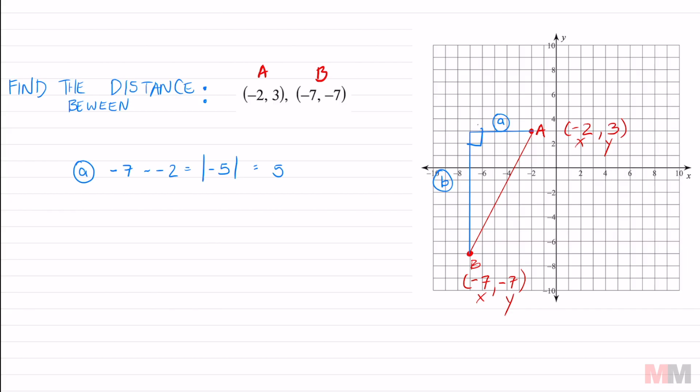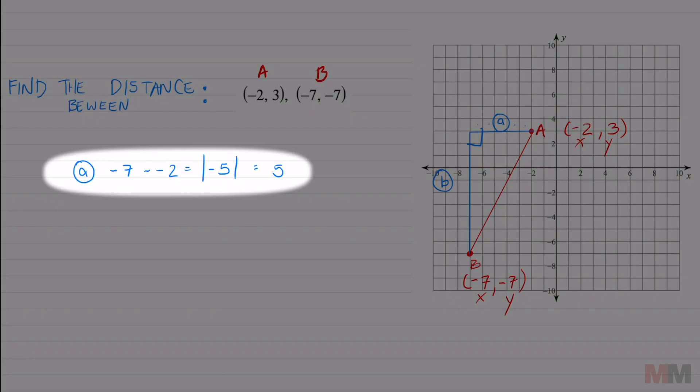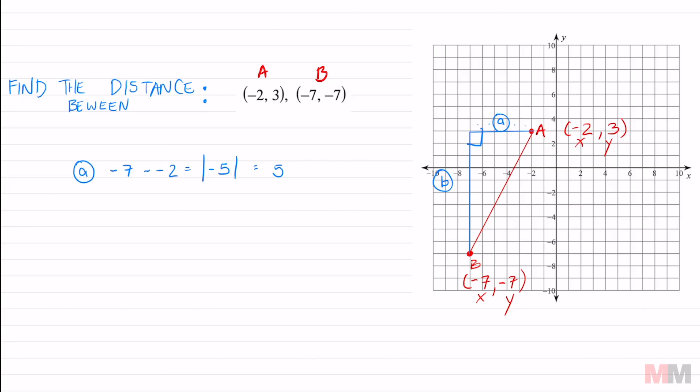So again, you can count one, two, three, four, five, or you can subtract the x coordinates negative seven minus negative two and then take the absolute value of it because we can't get a negative distance. So that's gonna be five.